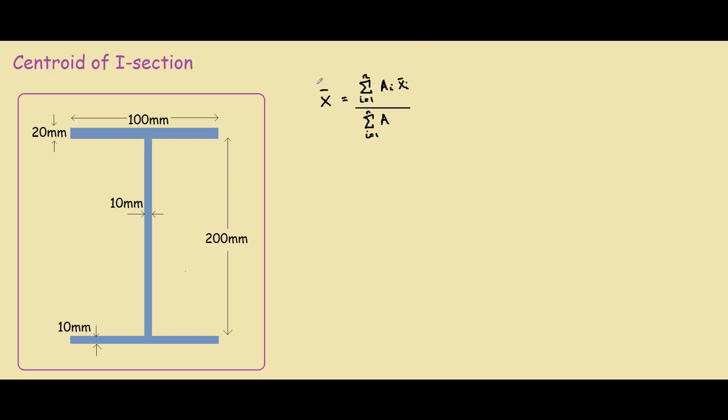So X-bar means the centroid, A_i means the area of the part that we want to analyze, and X_i is the part of the beam that we want to analyze as well, divided by the total area of the part. This will make more sense if I split this I-beam into three parts.